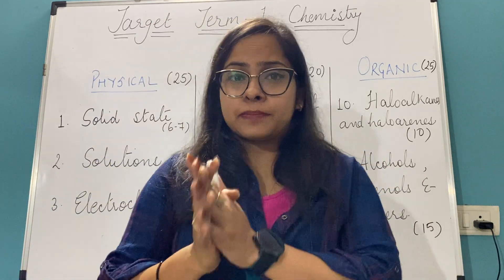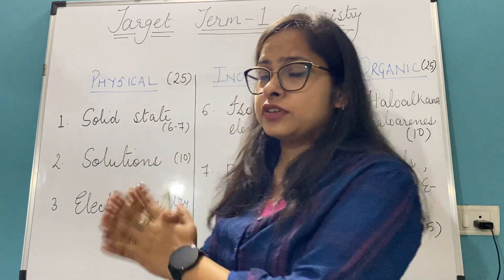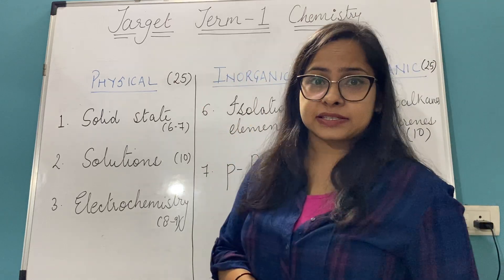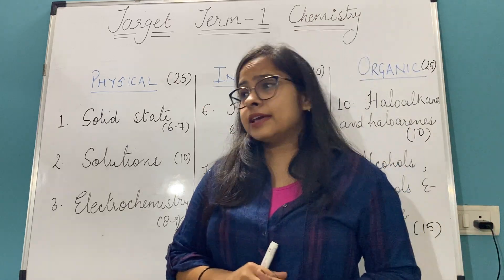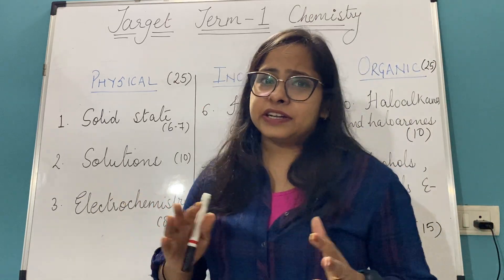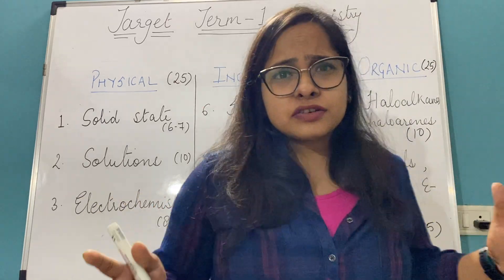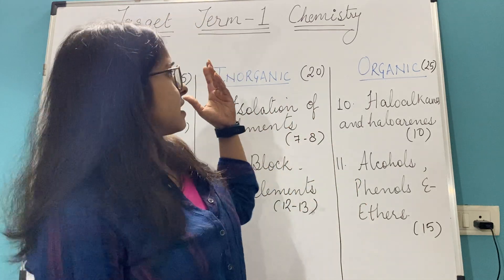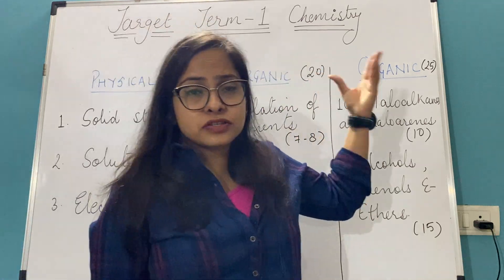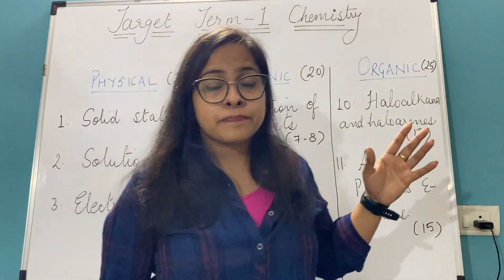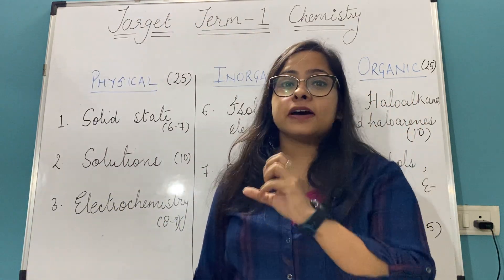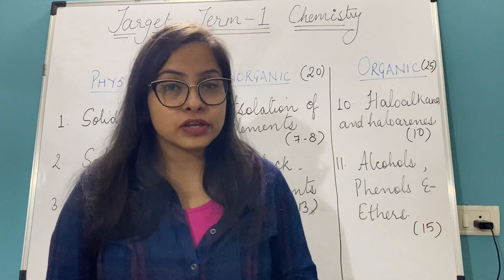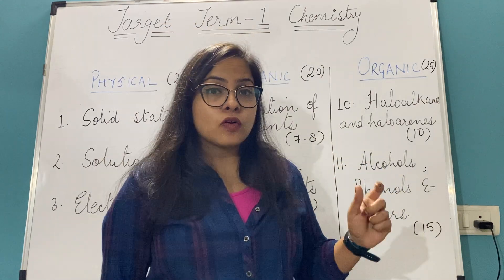Let's start with physical chemistry, which carries 25 marks. The division remains the same: Physical Chemistry 25 marks, Organic Chemistry 20 marks. But this time the catch for you is that Organic is still 20 marks but there are only 2 lessons.